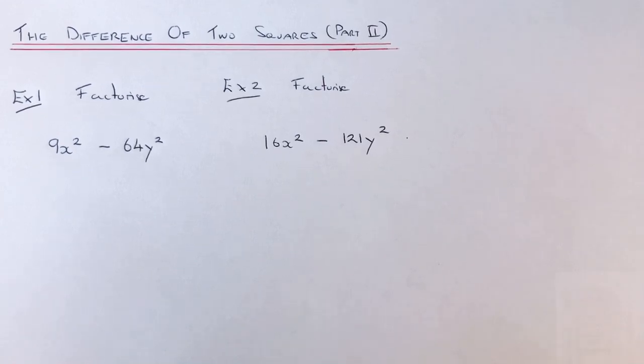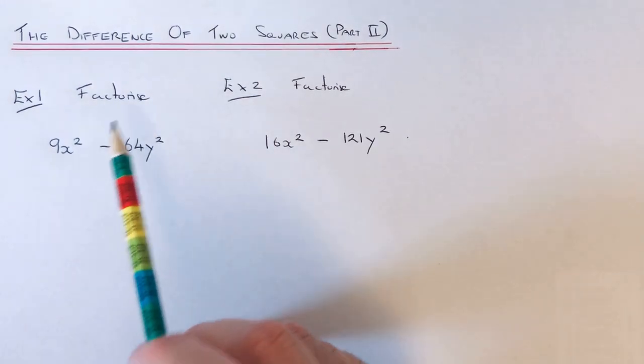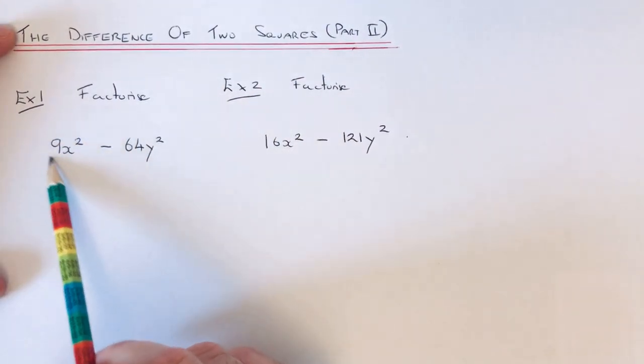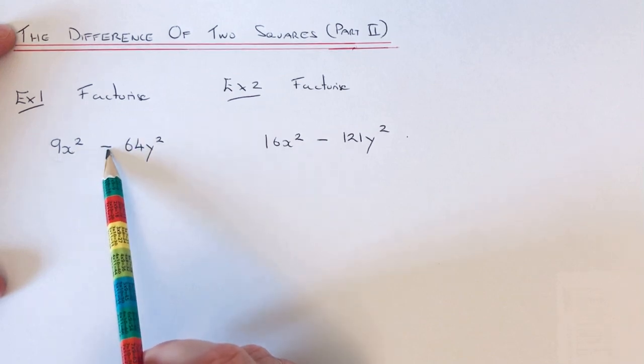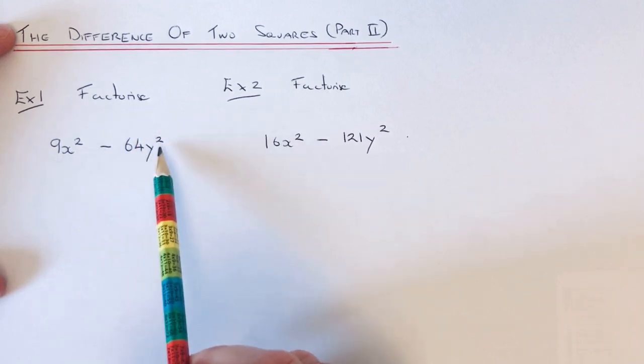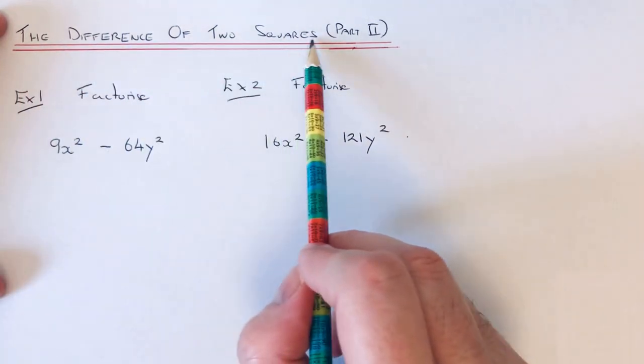Hi guys, welcome back. Today I'm going to show you how to factorize an expression where we have a squared term as the first term, then a minus sign in the middle, and another squared term as the second term. These are known as the difference of two squares.